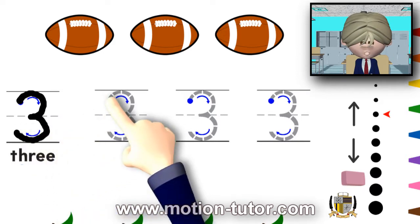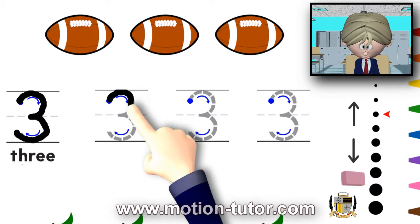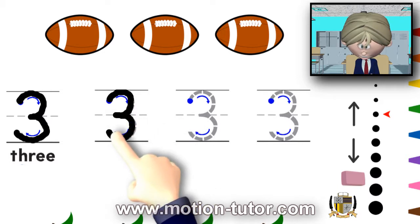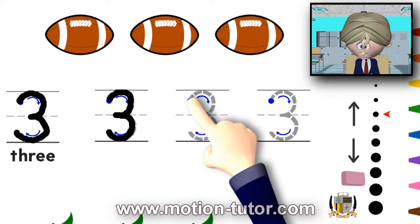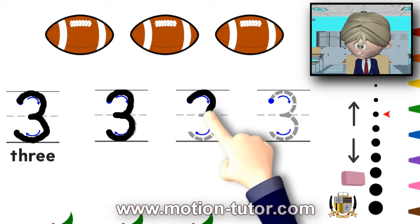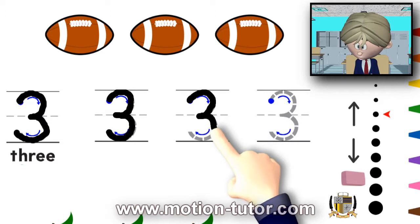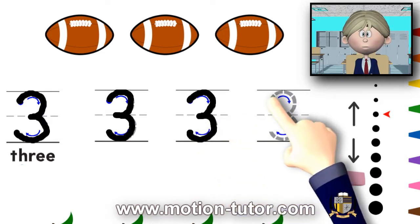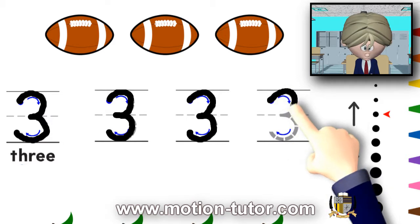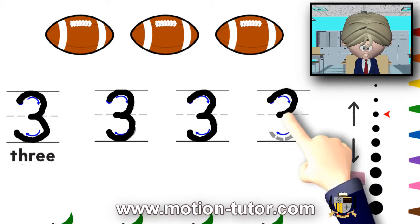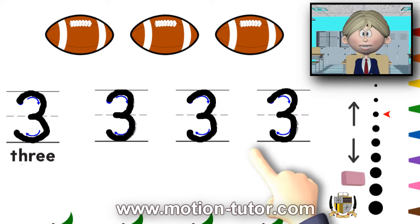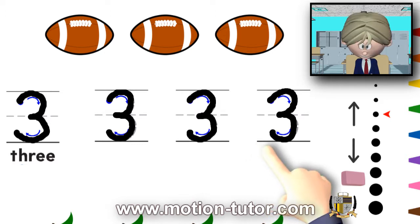We'll try it again. Around, right here in the middle, and then go around like that. We'll try it again — around the curve in the middle, and then around this bottom curve. And we'll try one more: around, and around. And so, that's how you write the number three.